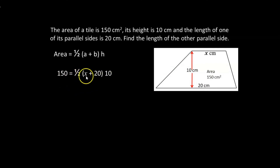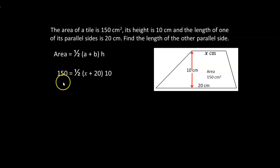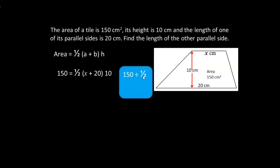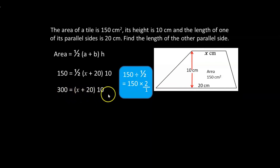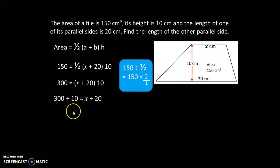To find X, I need to divide both sides by half. On the right side, dividing by half cancels it away, leaving (X plus 20) times 10. Dividing by half is the same as multiplying by its reciprocal, so 150 times 2 over 1 gives us 300. Now X plus 20 is multiplied by 10, so we divide both sides by 10: 300 divided by 10 gives us 30, which equals X plus 20.